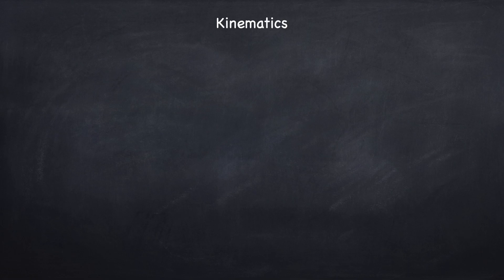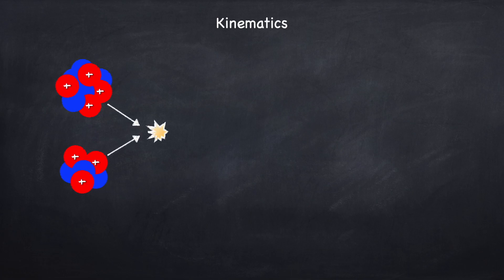Let's start off with kinematics. The basic idea is we have two different nuclei, which are made up of protons and neutrons. The protons have positive charge and the neutrons are electrically neutral. These two nuclei come together, they fuse into a larger nucleus, and in the process they will release some energy in the form of some type of particle.